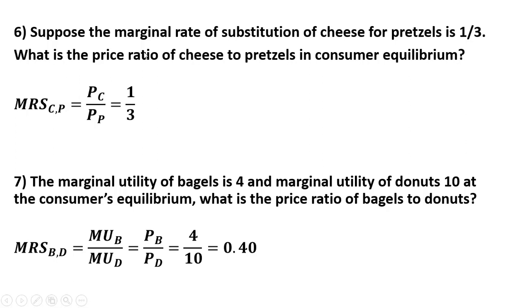In question 6, suppose the marginal rate of substitution of cheese for pretzels is one-third. What is the price ratio of cheese to pretzels in consumer equilibrium? It is just going to be one-third.